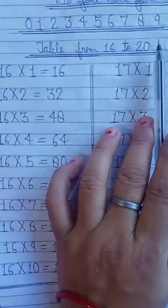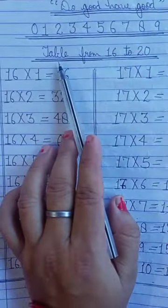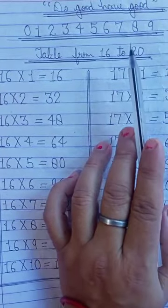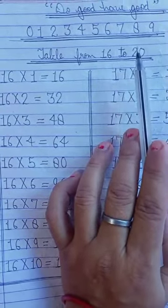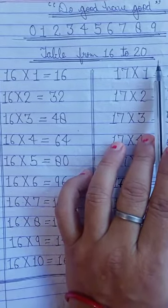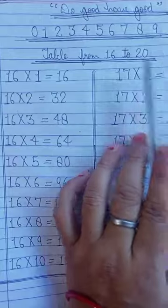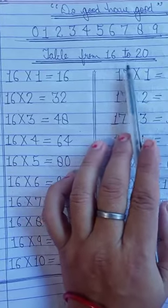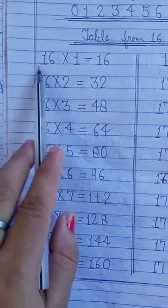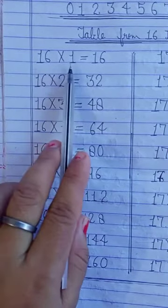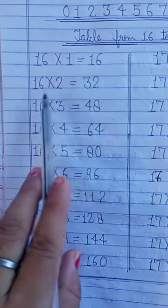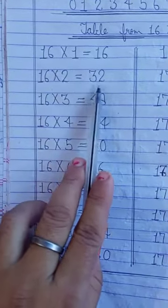Now, after 0 to 9 number, you write table from 16 to 20. In PT2, you wrote your table from 2 to 15. Then after 15, you write table from 16 to 20. Now, in first line, after margin, you write 16 multiply 1 is equal 16. That means 16 ones are 16. 16 twos are 32. 16 threes are 48.